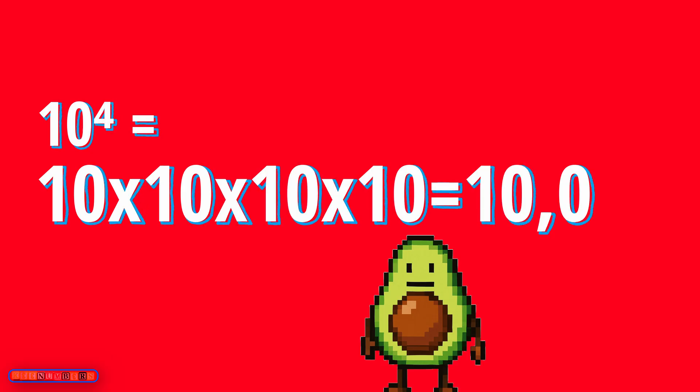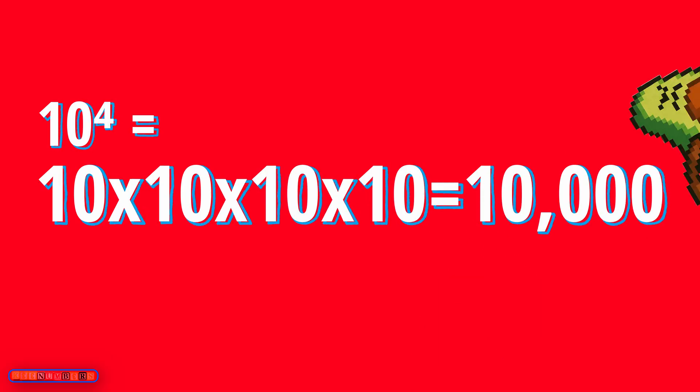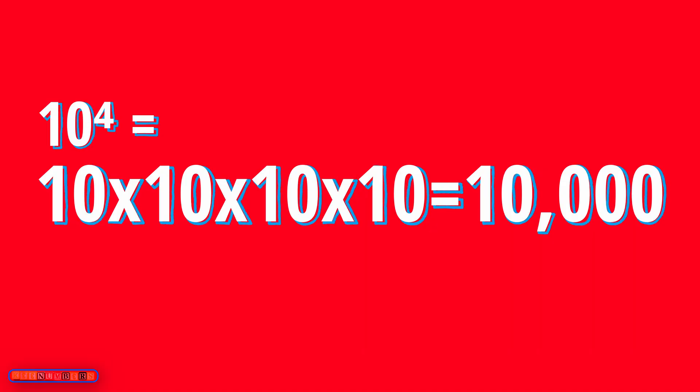10 to the 4th power means you are multiplying 4 copies of 10. So that means 1,000 times 10, or 10,000.